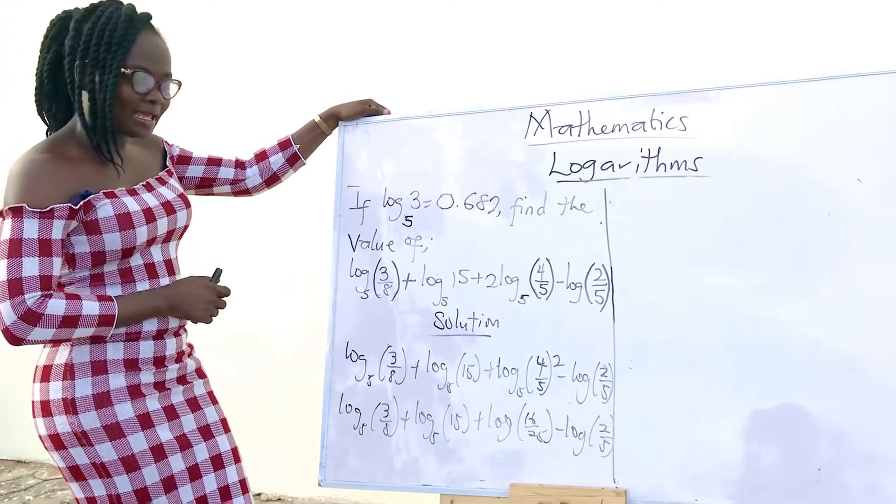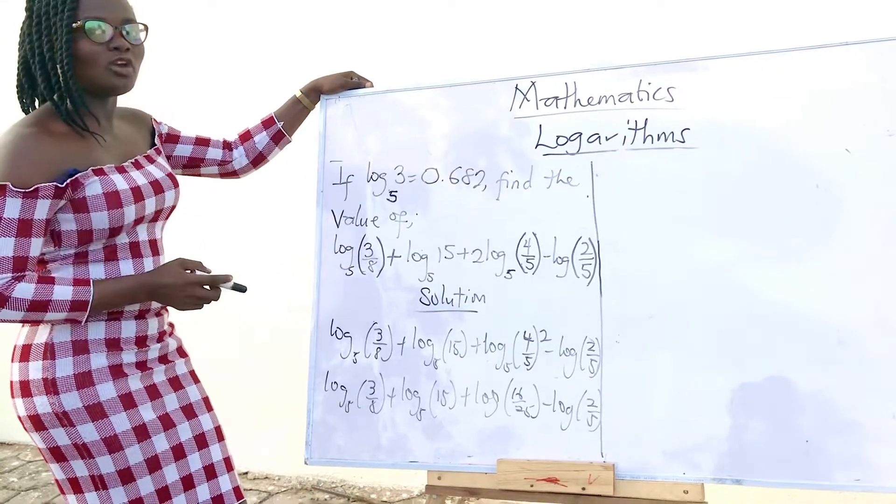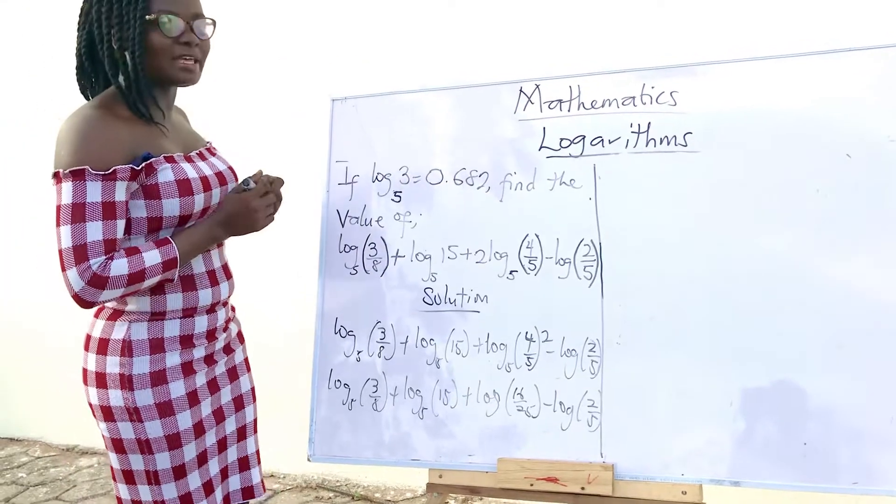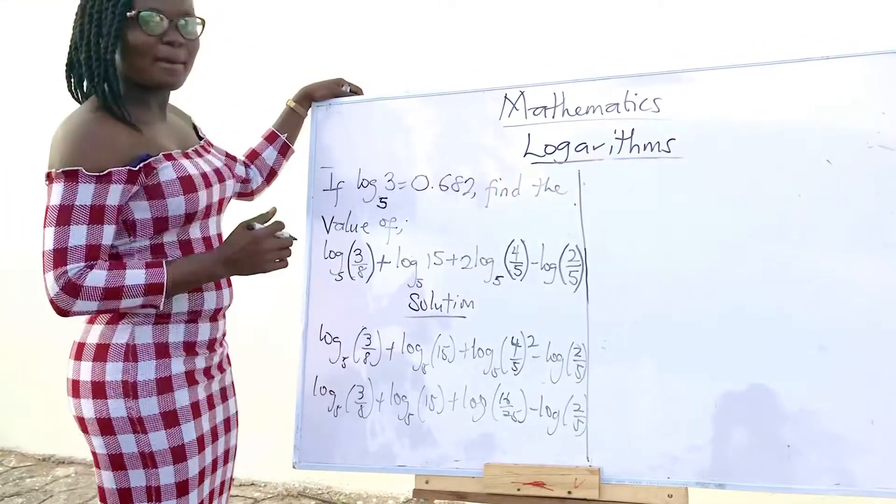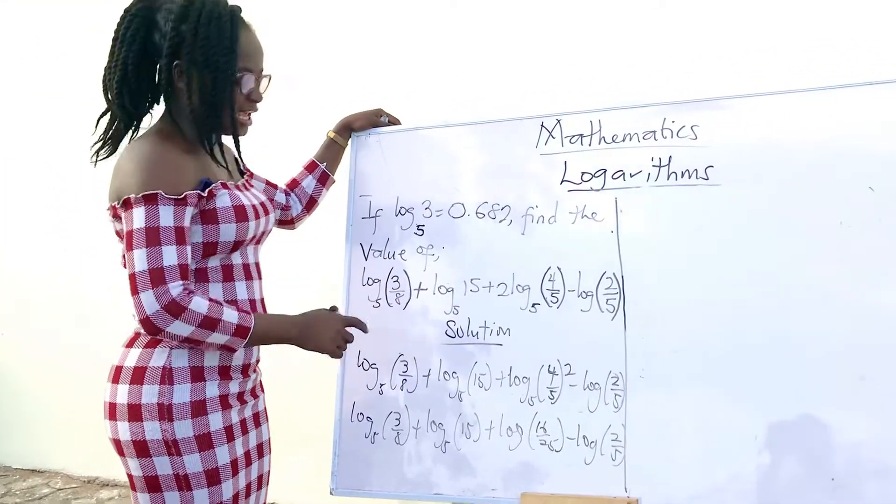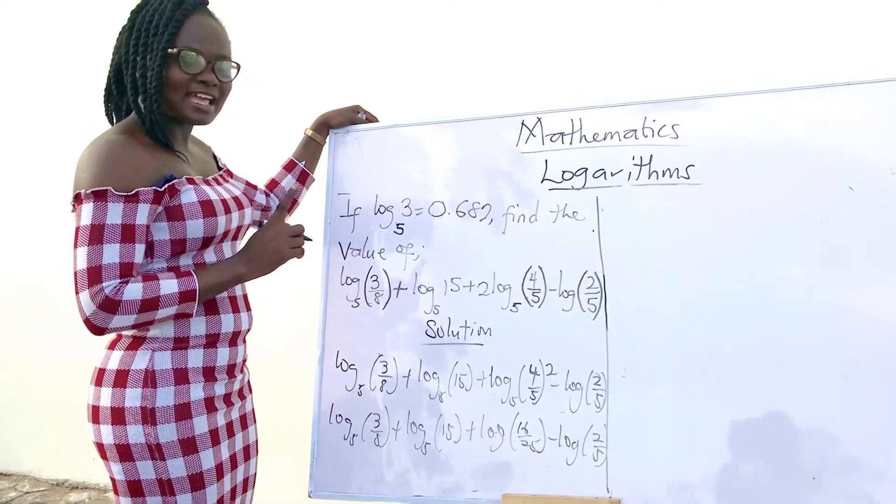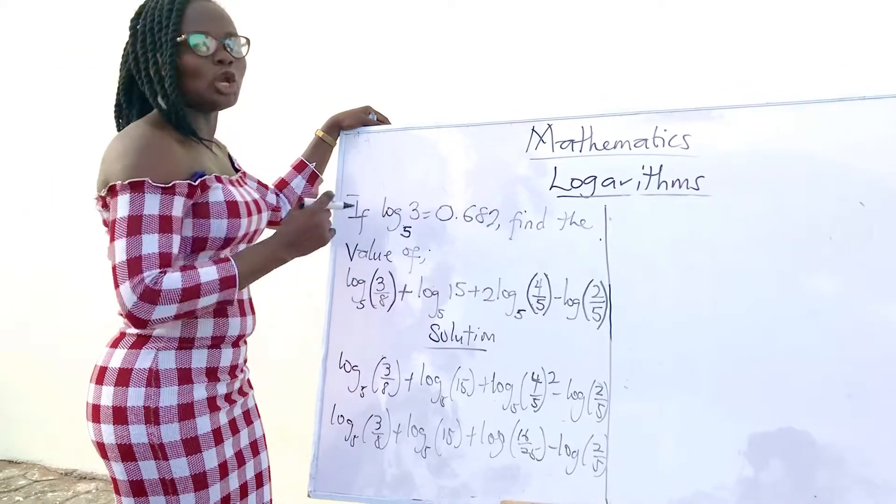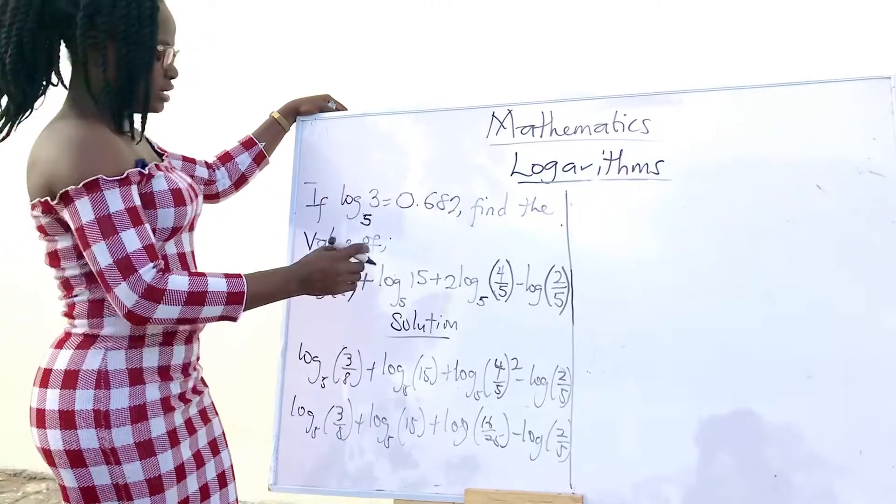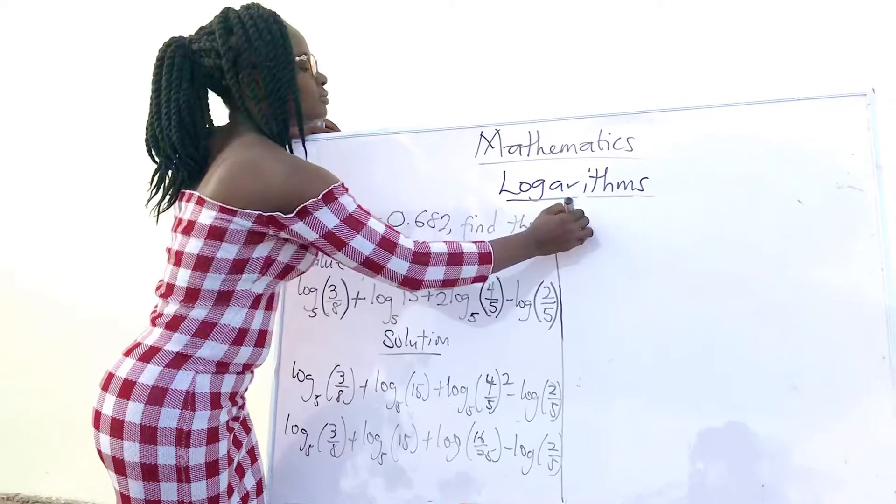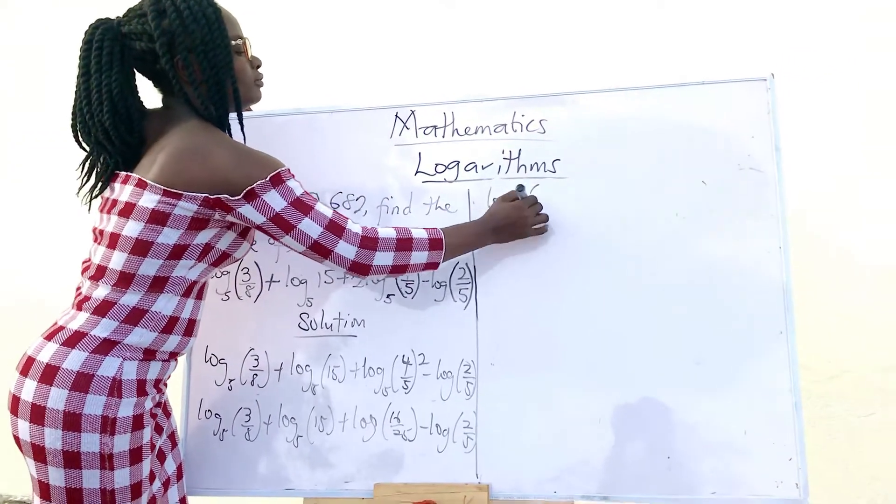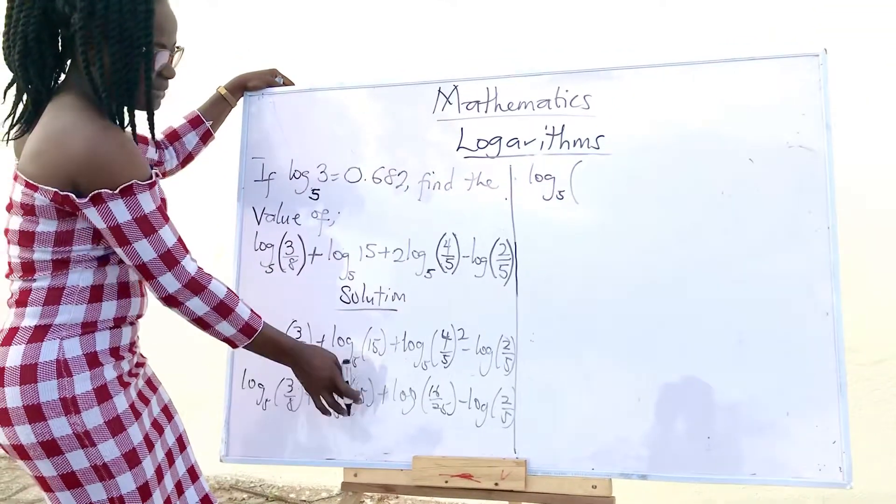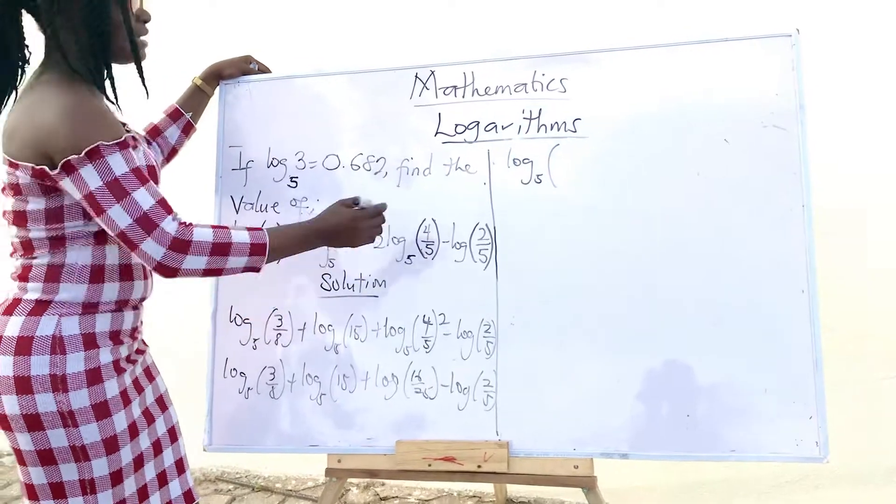Now, which of the laws can we apply over again? We can apply the first law of logarithm. And I believe you remember the first law. If they are the same base and they are added, you multiply them. So, you pick one of the logs and multiply the numbers.